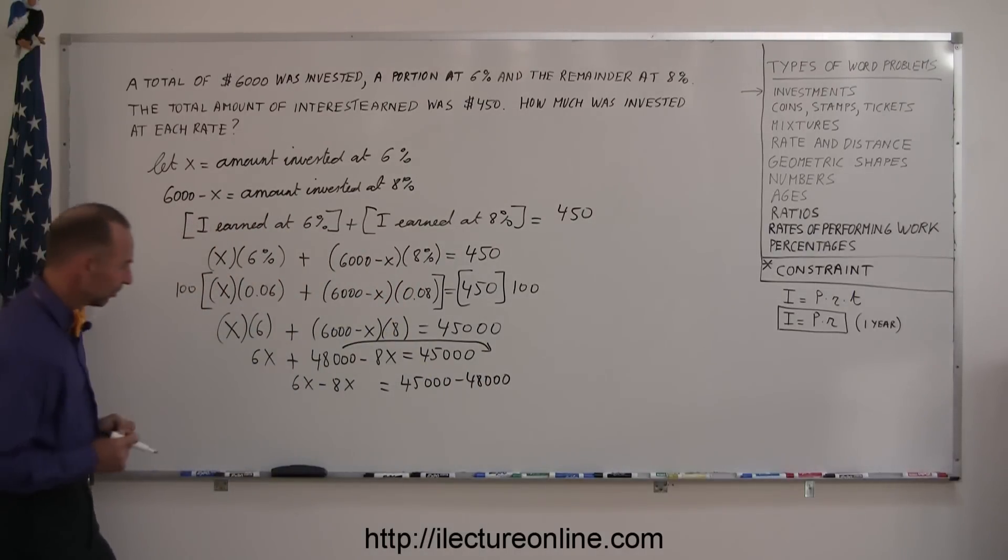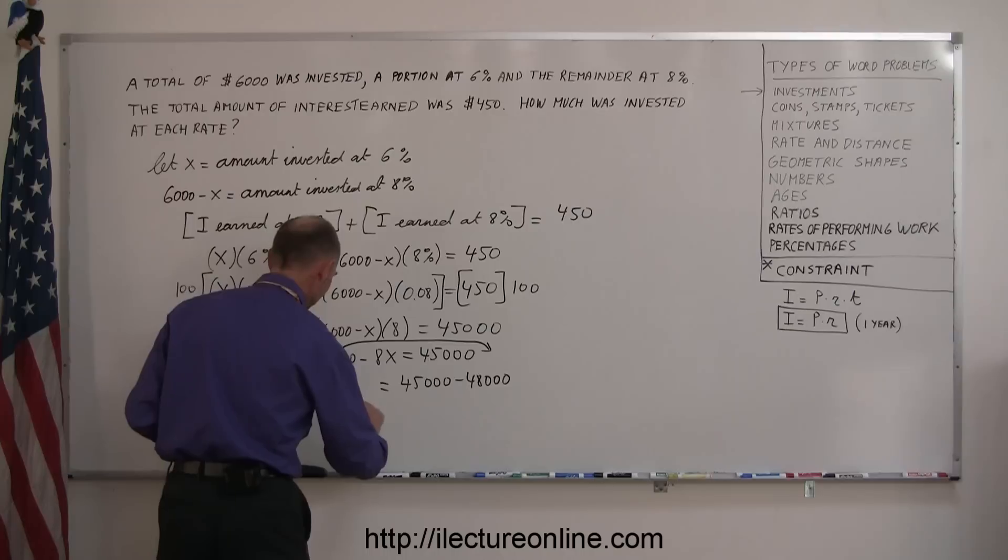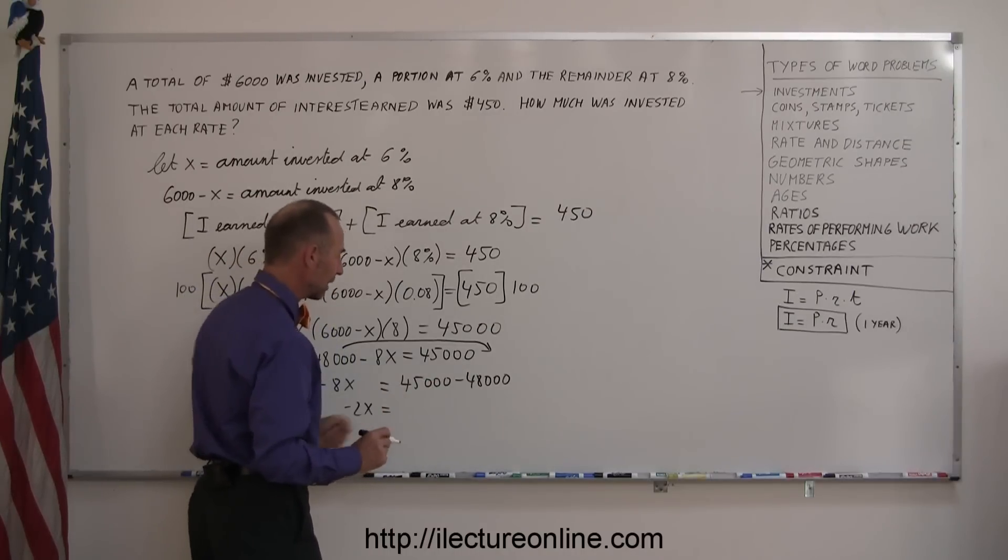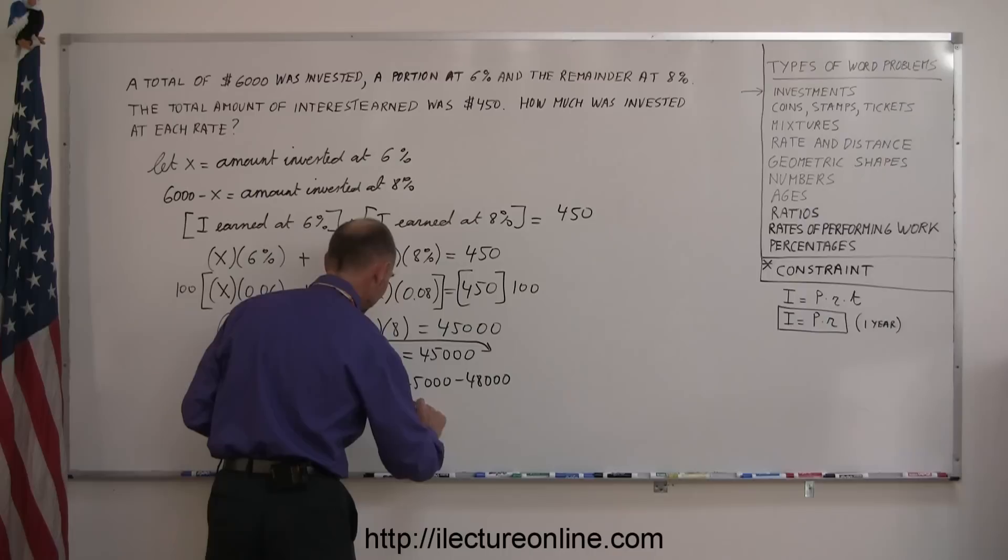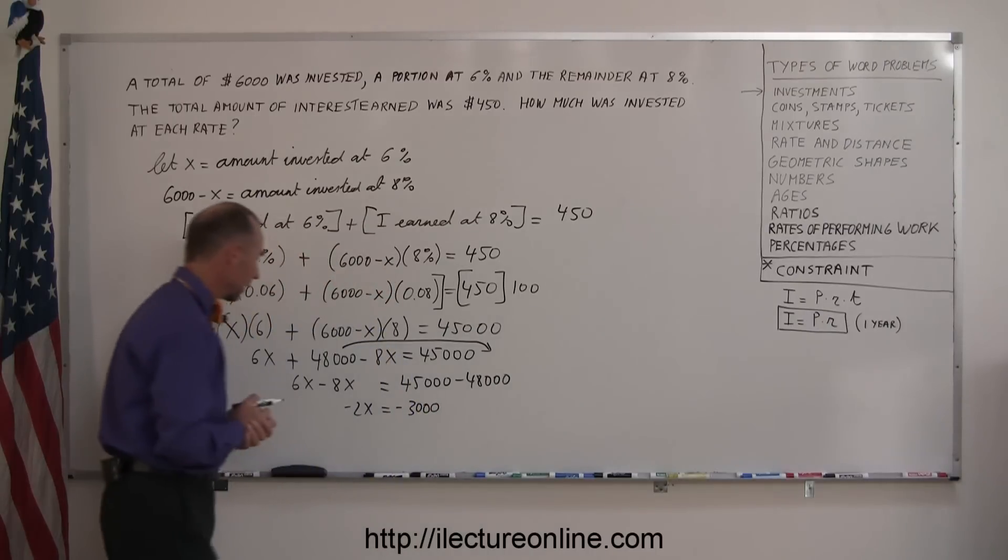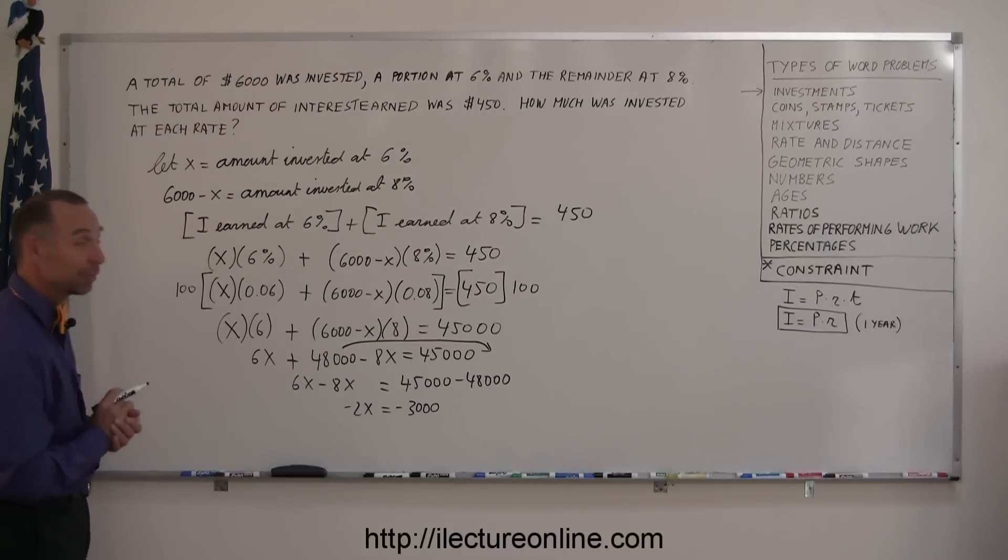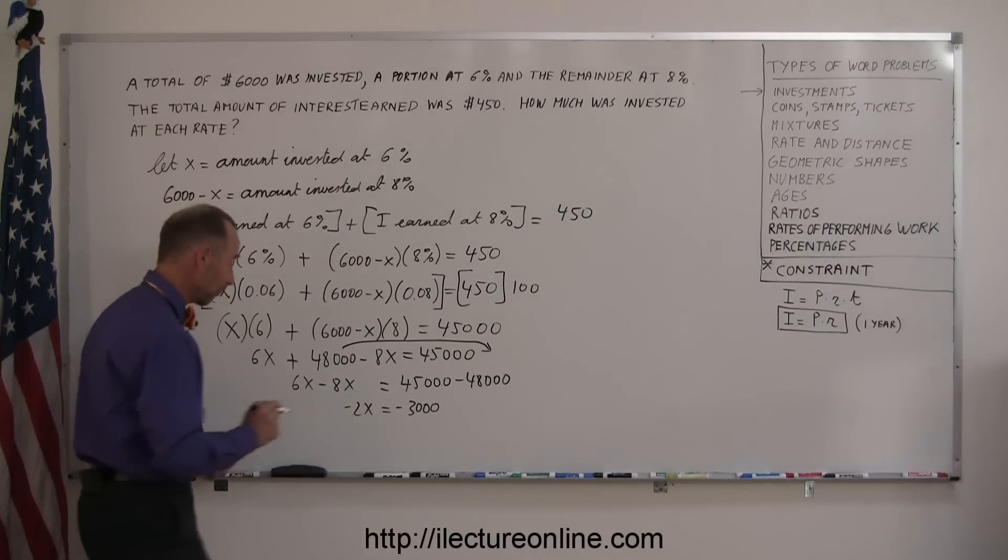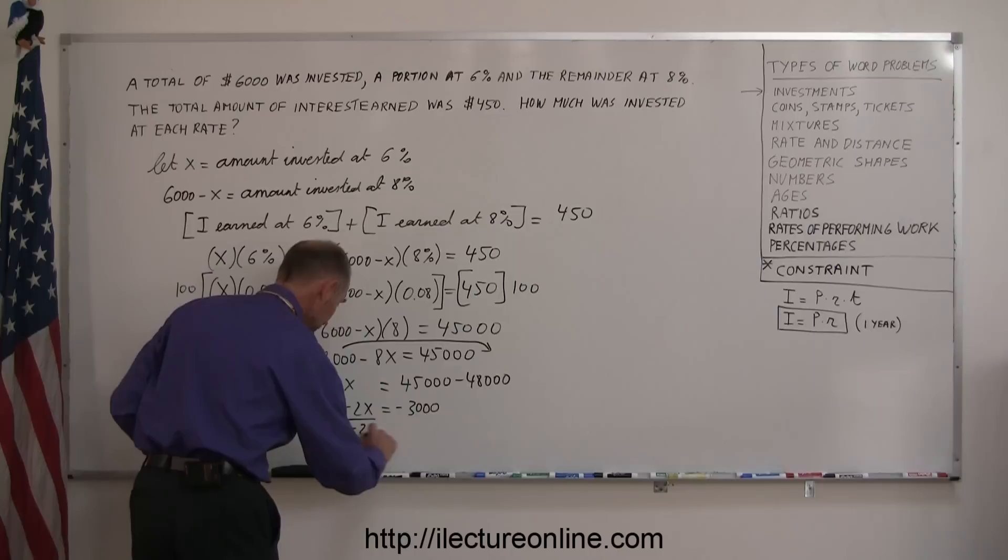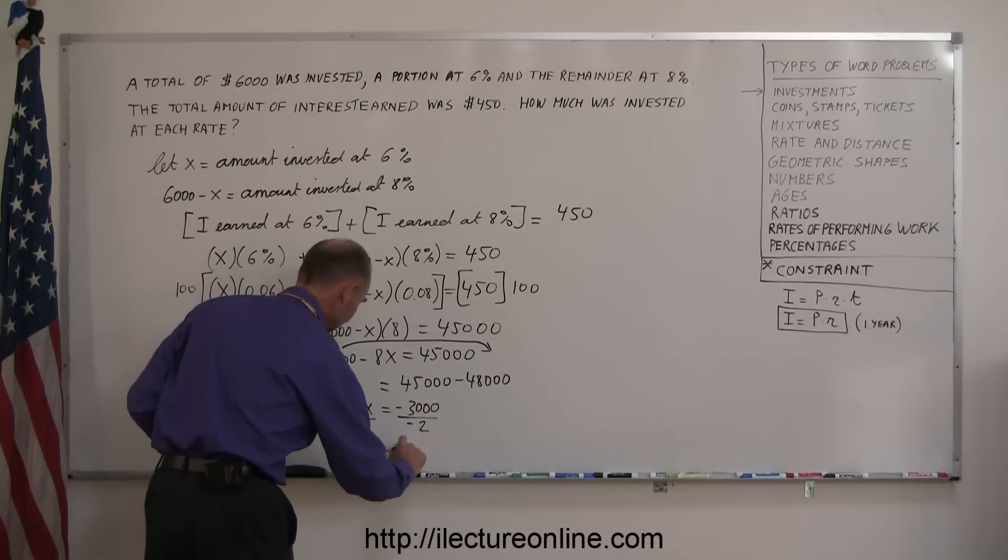Now I combine like terms, 6X minus 8X is minus 2X, equals 3,000. And finally, I divide both sides of the equation by the numerical coefficient of X, or the negative 2, negative 2, so X equals 1,500.